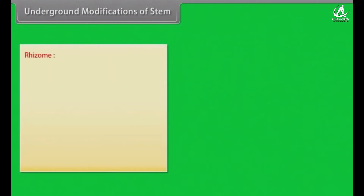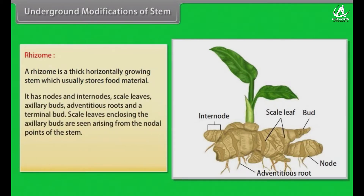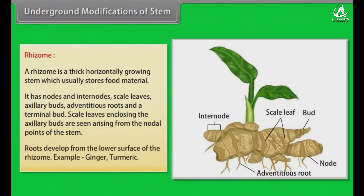A rhizome is a thick, horizontally growing stem which usually stores food material. It has nodes and internodes, scale leaves, axillary buds, adventitious roots, and a terminal bud. Scale leaves enclosing the axillary buds are seen arising from the nodal points of the stem. Roots develop from the lower surface of the rhizome. Examples: Ginger, Turmeric.